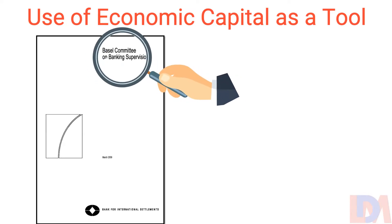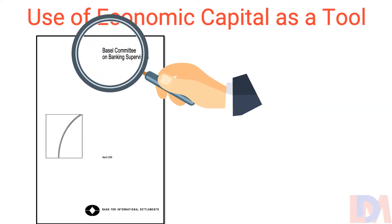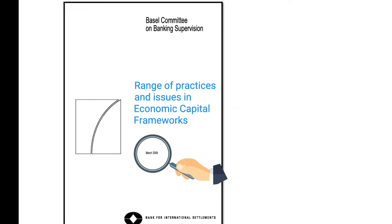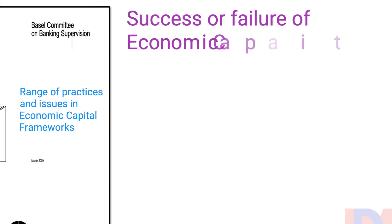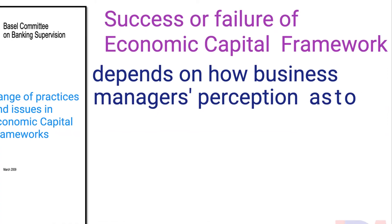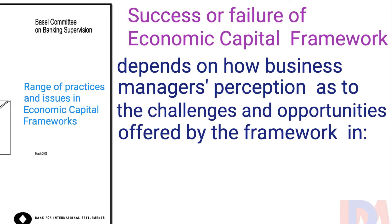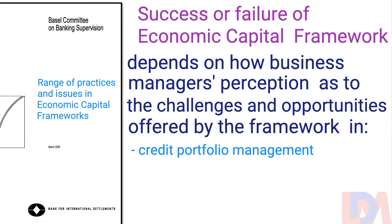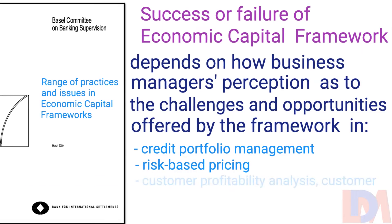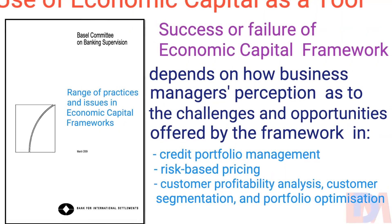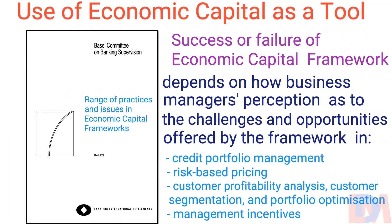The Basel Committee on Banking Supervision has published a research paper entitled 'Range of Practices and Issues in Economic Capital Frameworks' in March 2009. As per the paper, the success or failure of an economic capital framework in a bank can be assessed by looking at how business line managers perceive the constraints economic capital imposes and the opportunities it offers in the following areas: credit portfolio management, risk-based pricing, customer profitability analysis, customer segmentation, portfolio optimization, and management incentives.